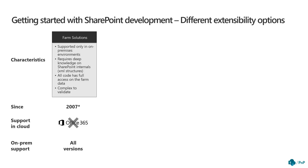On the positive side, farm solutions are still supported in on-premises from 2007, 2010, 2013, 2016, and 2019 versions — absolutely a supported extensibility option. However, you cannot move that extensibility to the cloud.